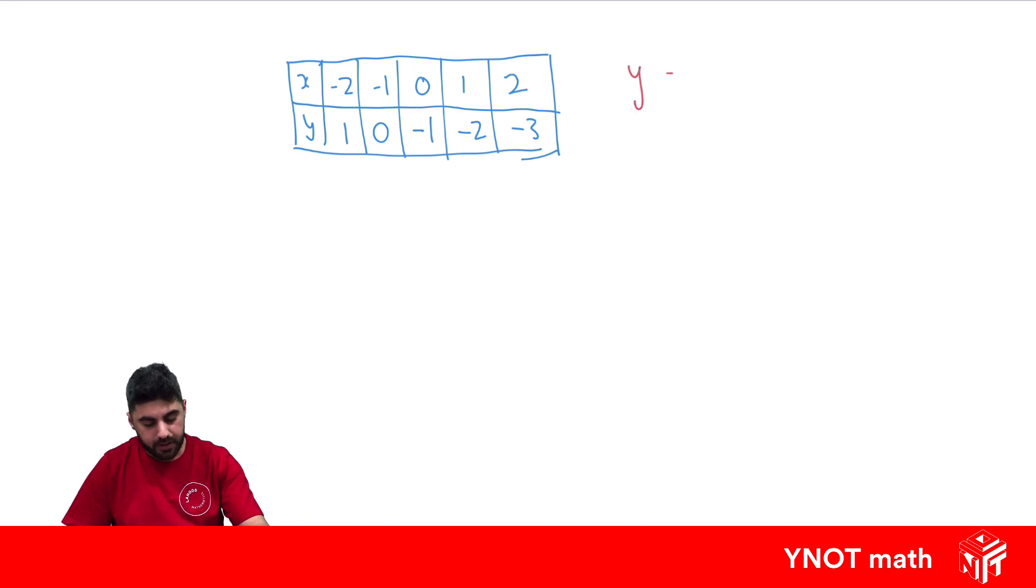Remember, we know we want y equals something times x plus or minus something else. So to get that last one, we have to look where x equals 0 over here. And whatever the value for y is, in this case it's minus 1, that's exactly what needs to go over there. So we can write in minus 1.